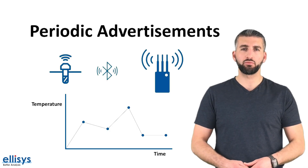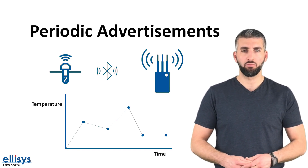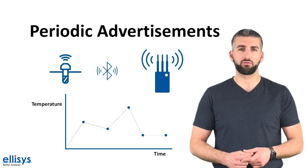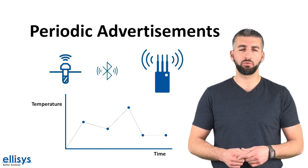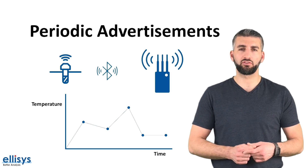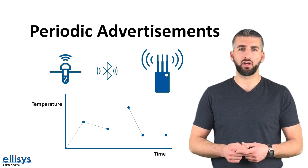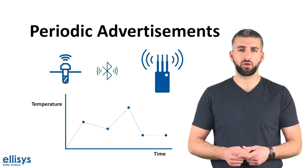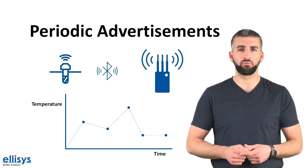Another new feature introduced in Bluetooth 5 is the periodic advertising mode. Periodic advertisements are simply extended advertisements but are sent out continuously at a fixed interval. For example, think of a use case where we have a sensor device gathering data, and multiple scanner devices that need to continuously monitor it. We can use periodic advertisements to continuously send out temperature data that could be changing over time to these multiple scanner devices, without having to form a connection between them.